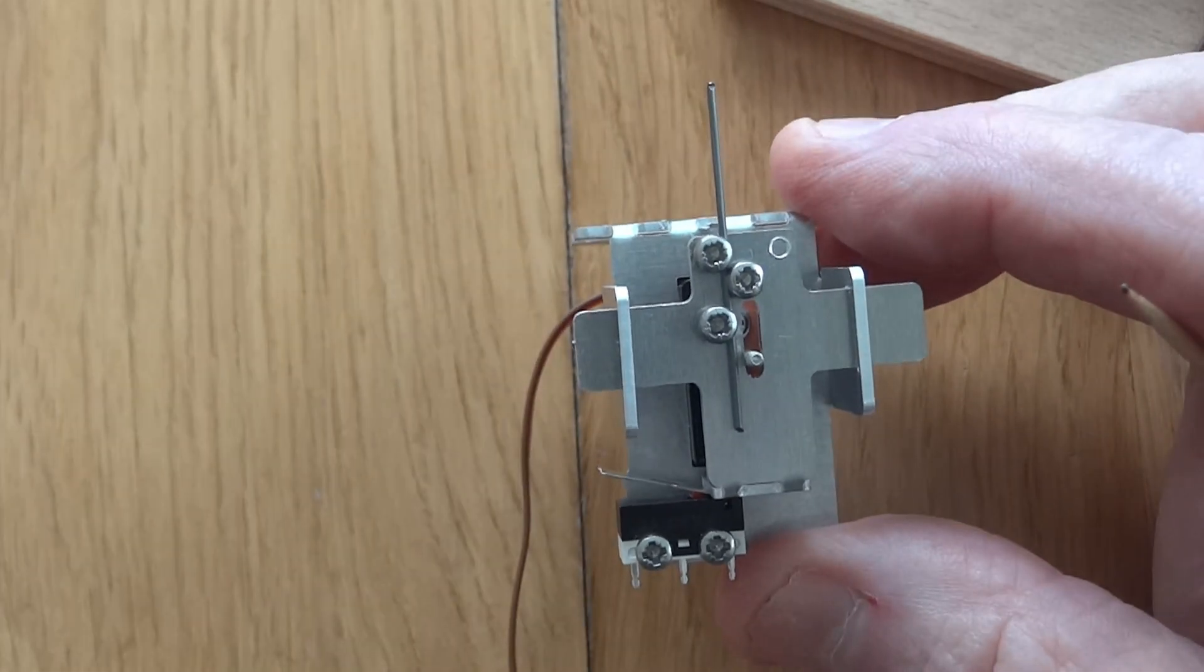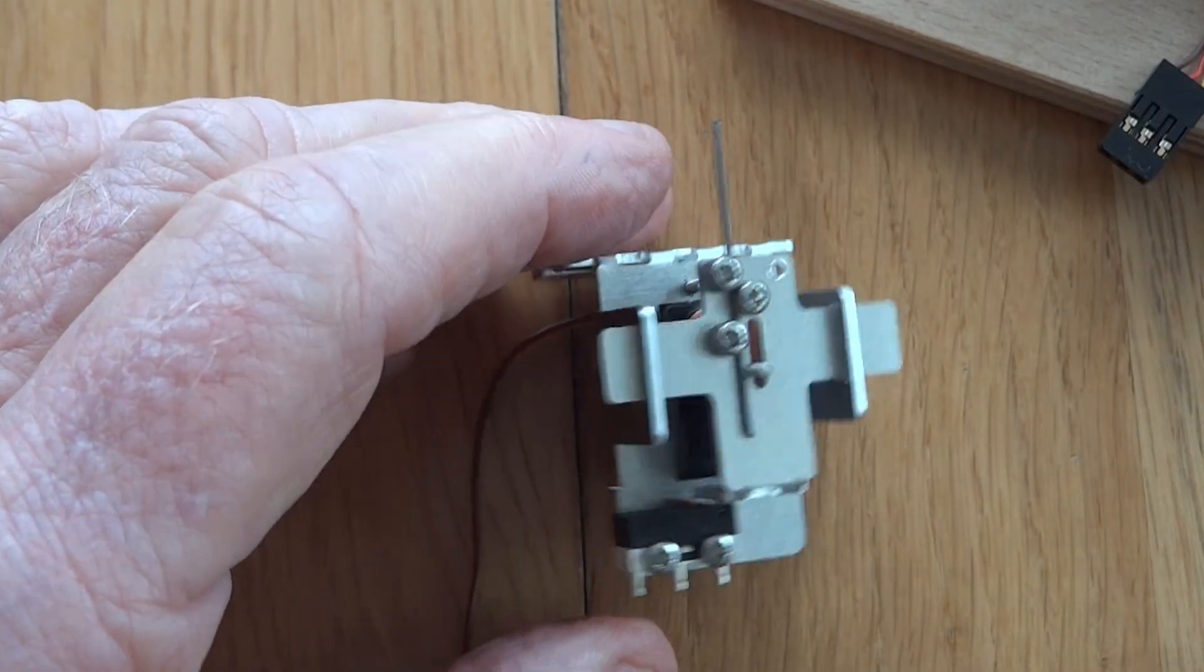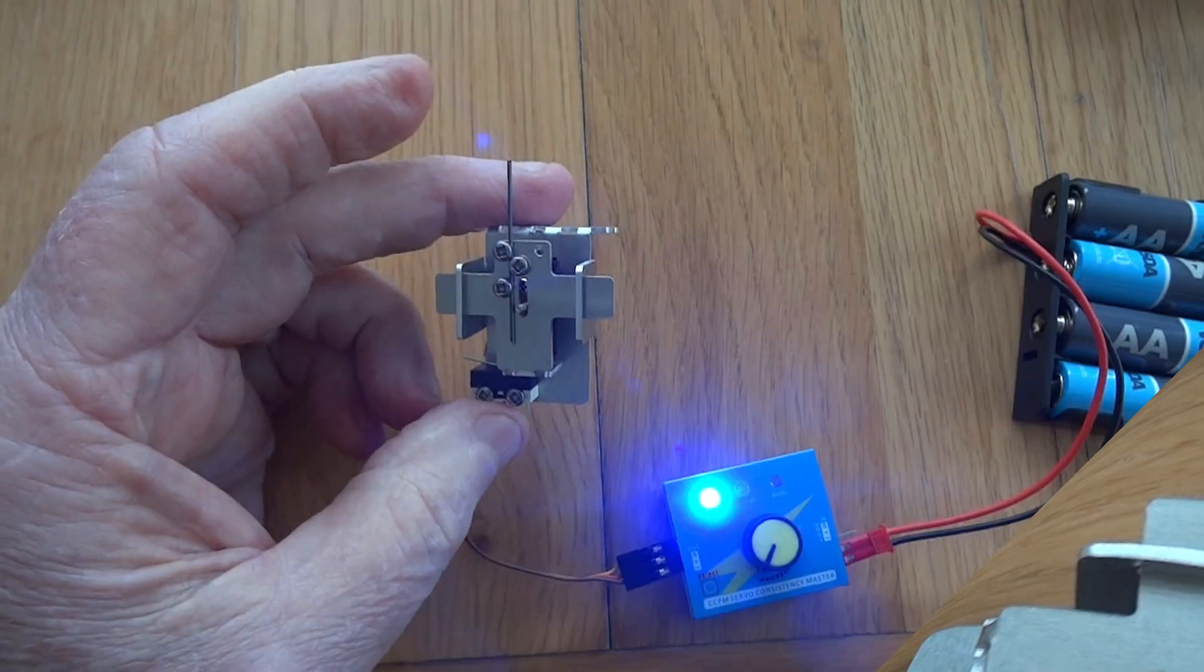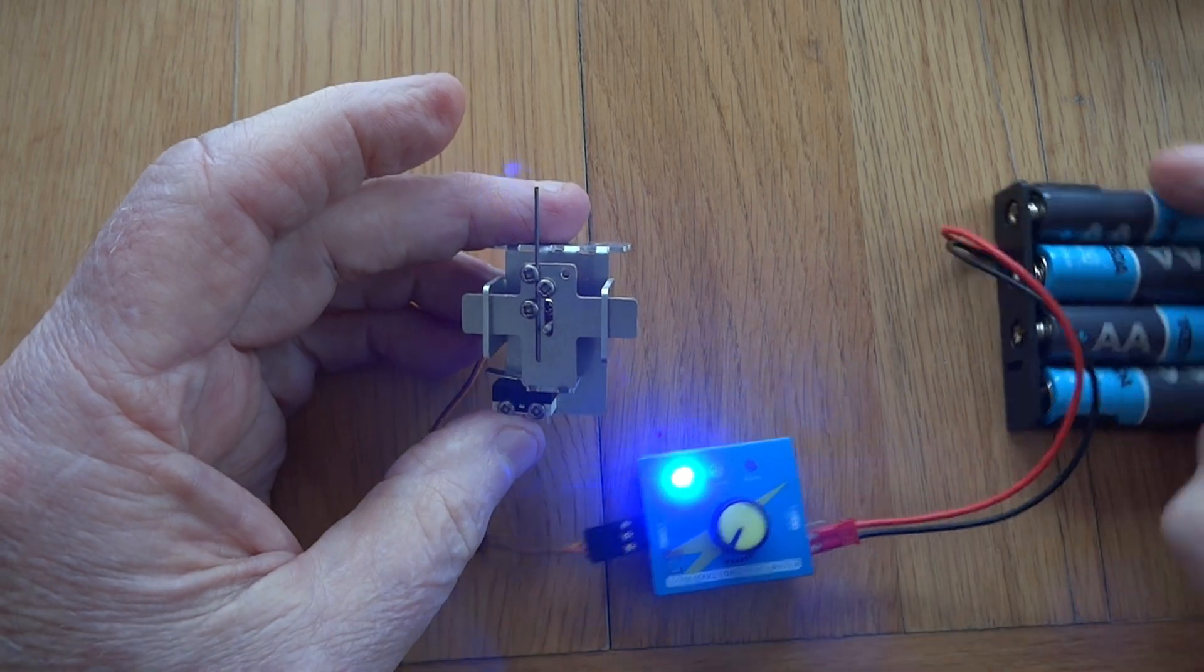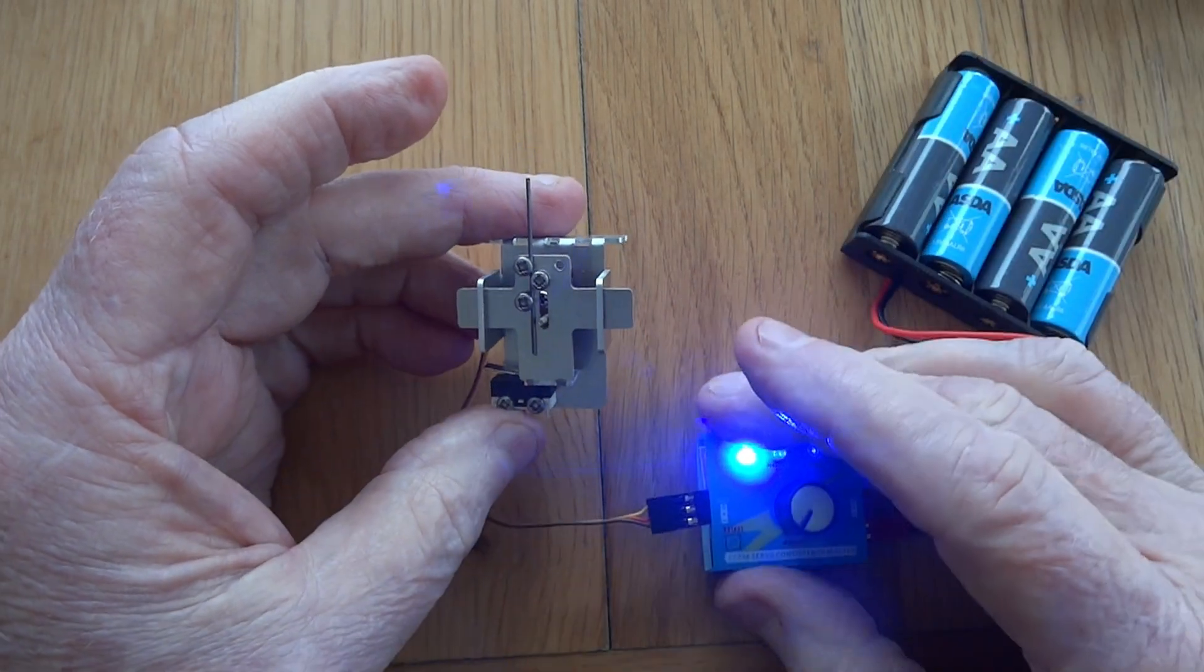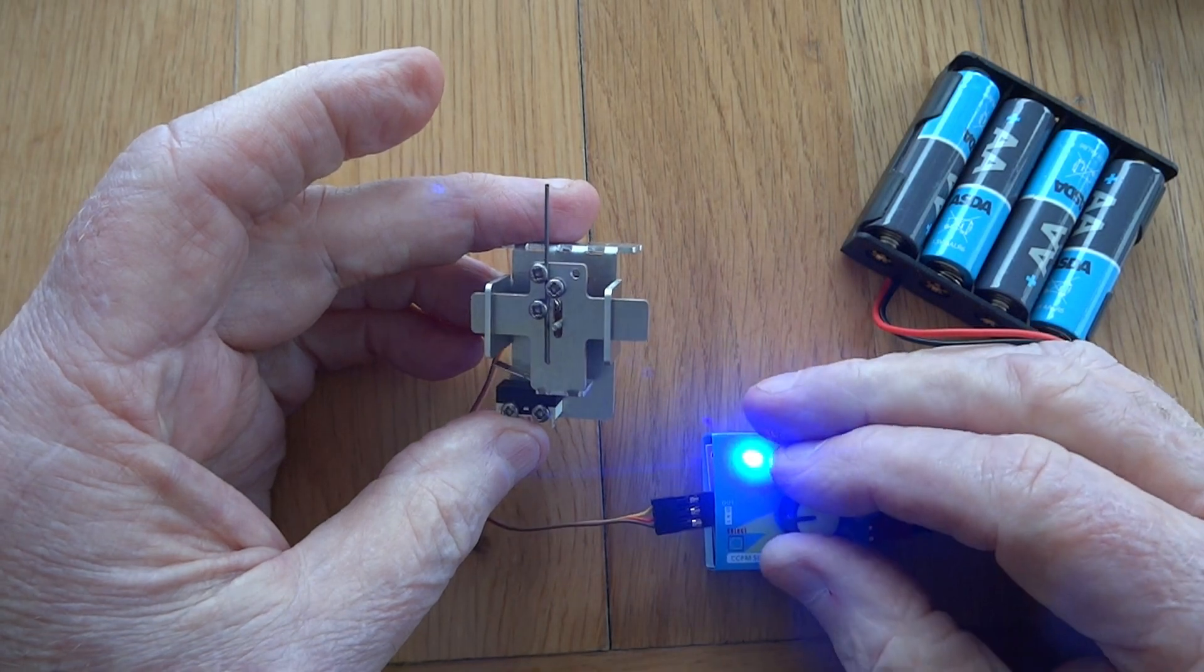So let's have a look at the mount in operation. I've hooked the mount up now to a servo tester and it's on my battery pack, and I can now operate the unit like this.